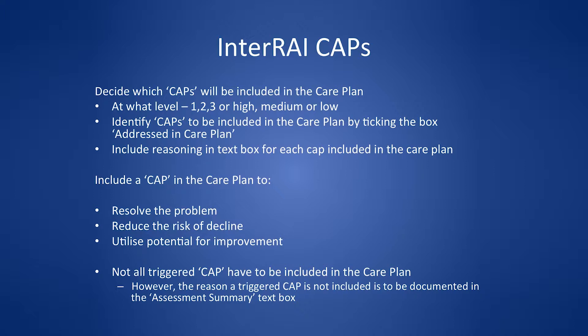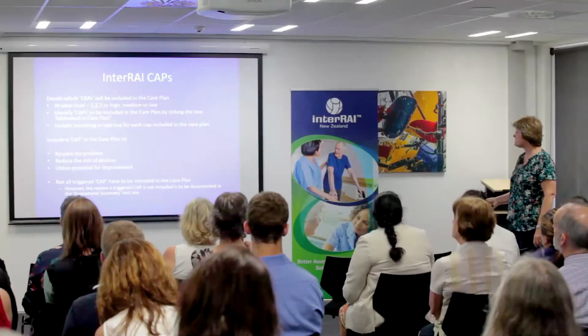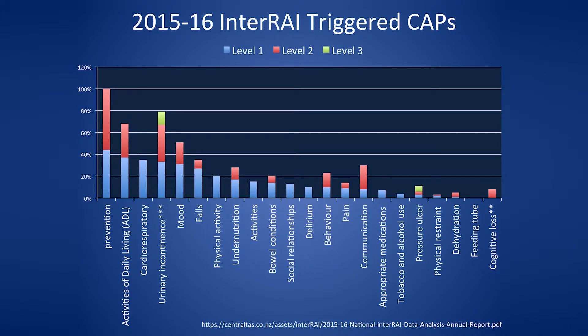CAPs are at different levels — one, two, or three, being high, medium, and low; some just have one. To include a CAP in the care plan you have to resolve a problem, reduce the risk of decline, or utilize potential for improvement. Not all CAPs have to be included in the care plan, but if you don't include one you just need to make a note of why not. For example, the prevention CAP is always triggered in New Zealand due to a different baseline for initial assessment — you just make a note that it's not relevant to New Zealand and move on.